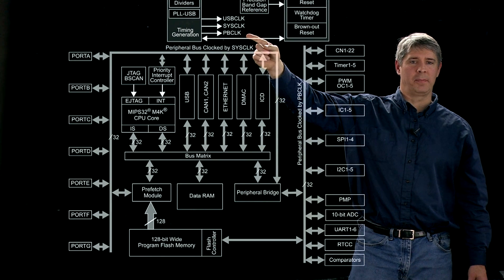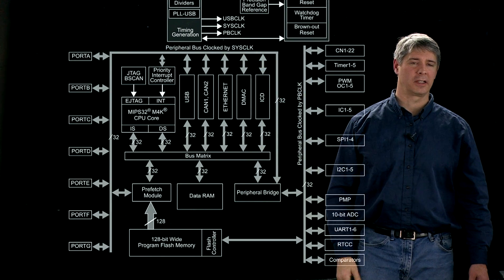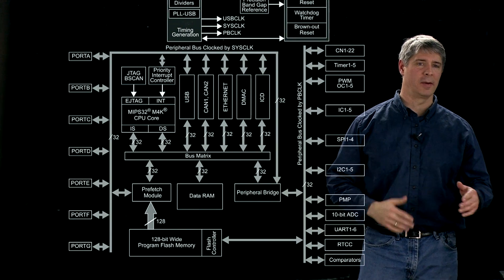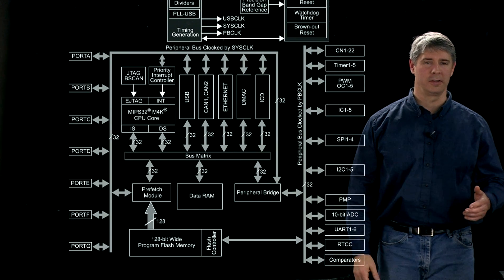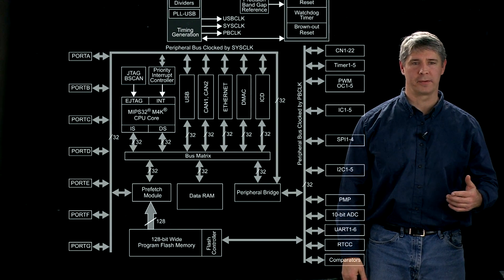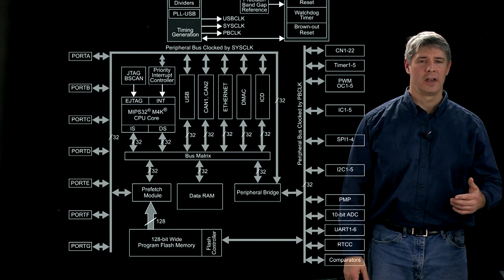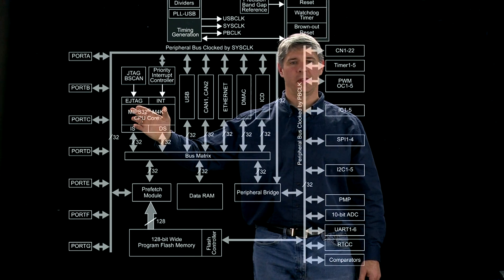And then the last one is the PB clock, or peripheral bus clock, and that's what's used to clock a number of the peripherals on the PIC32. We're also going to clock the peripheral bus at 80 megahertz. So let's start over here with the CPU.